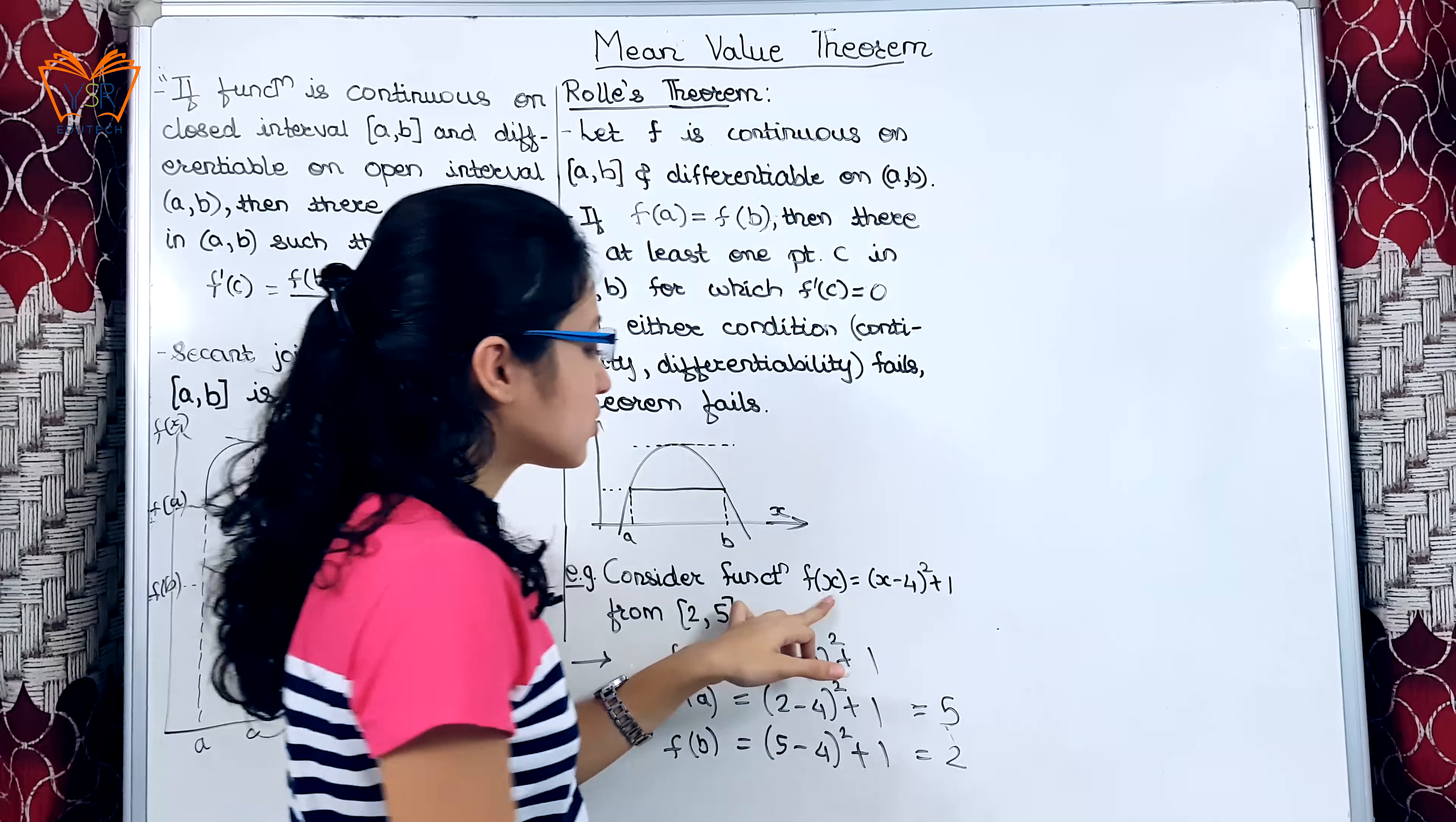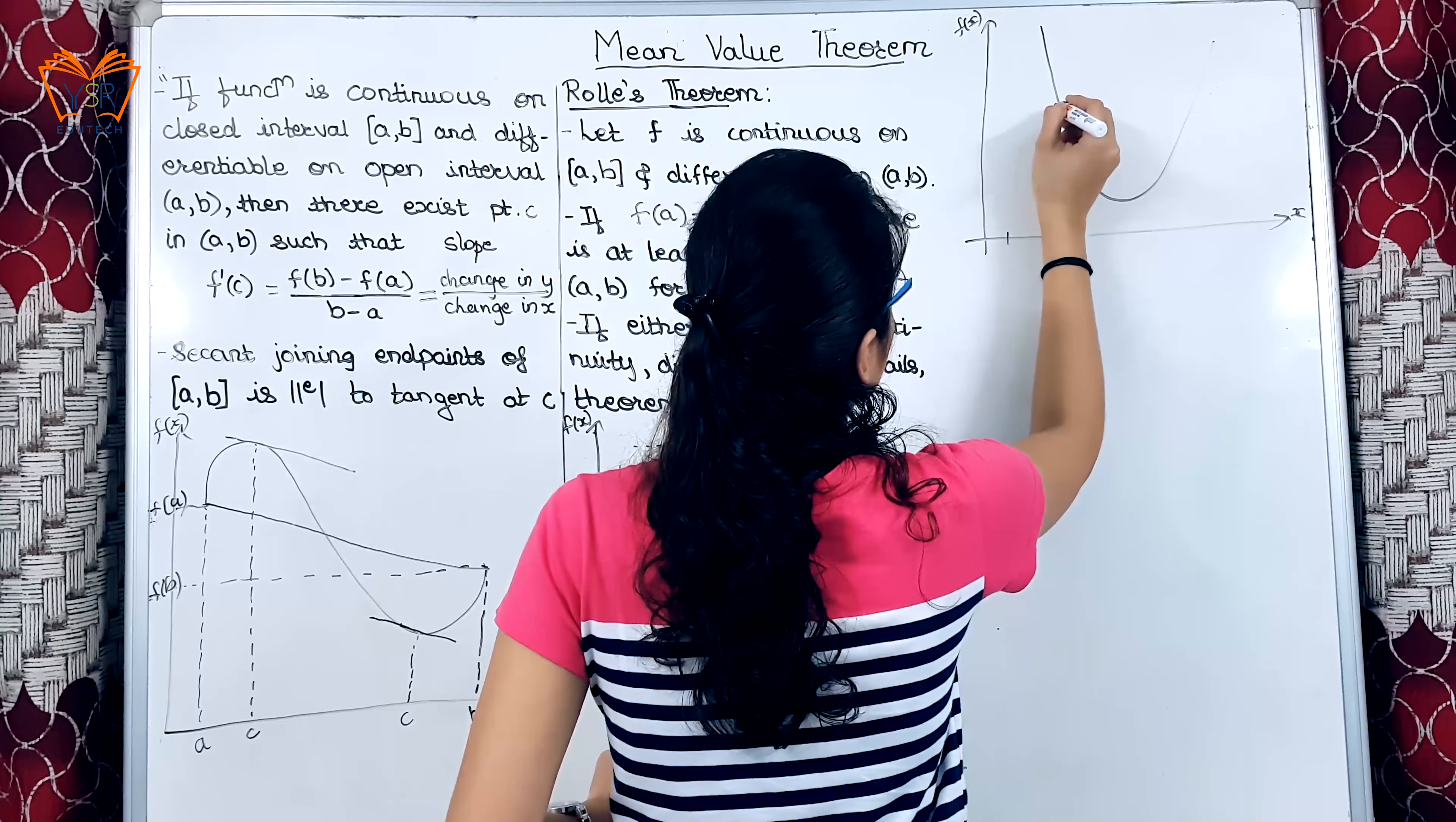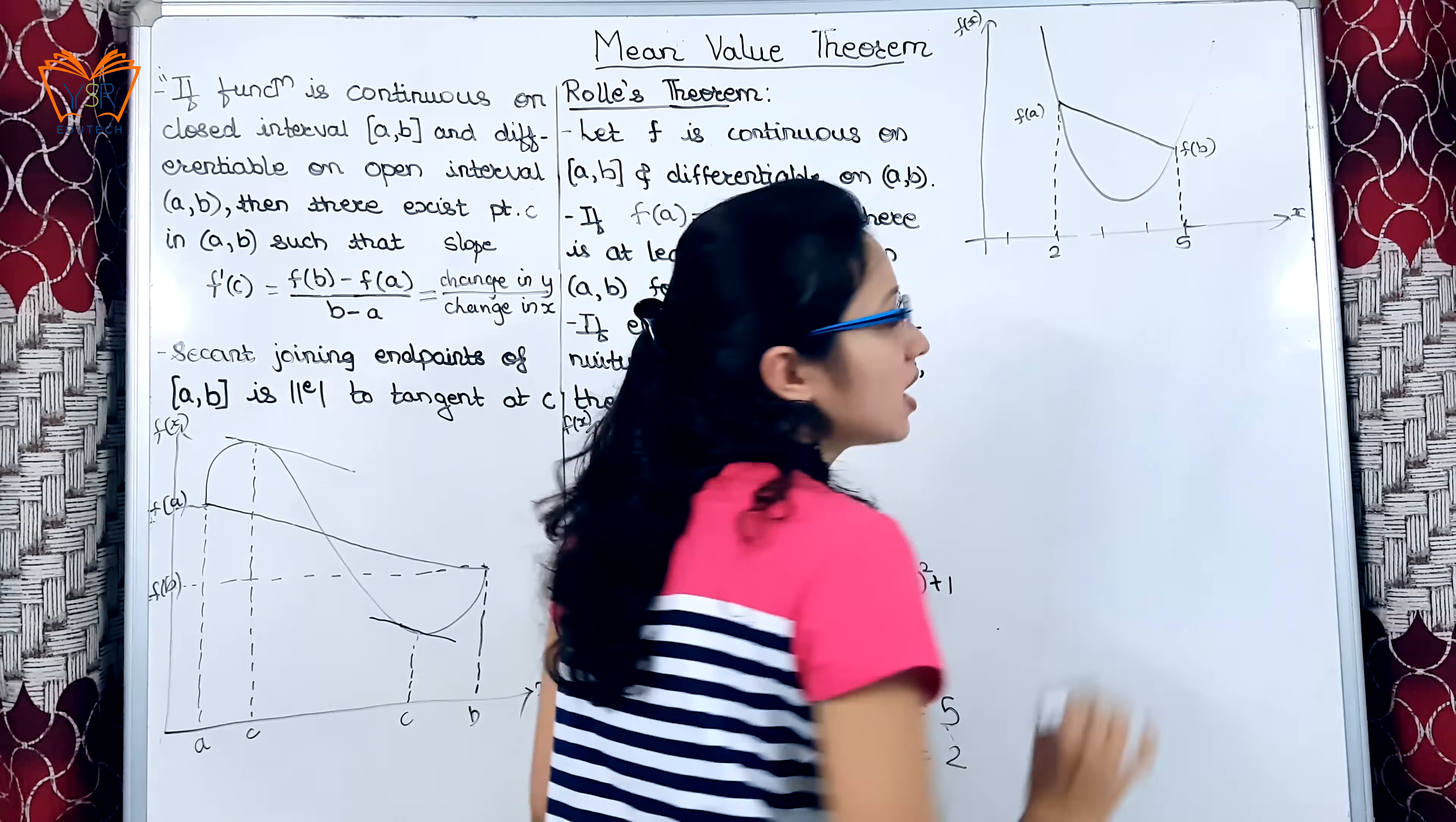Here if we substitute various values of x, the graph that we will obtain will be somewhat like this. This is x, f(x). So, at point a or at point 2, f(a) is 2. This is f(a) and at point 5 value of f(b) is 2.